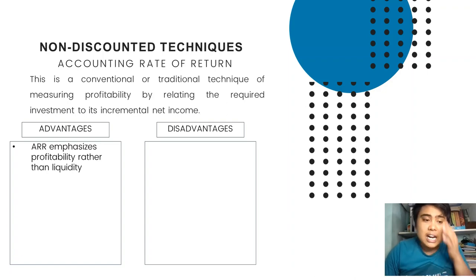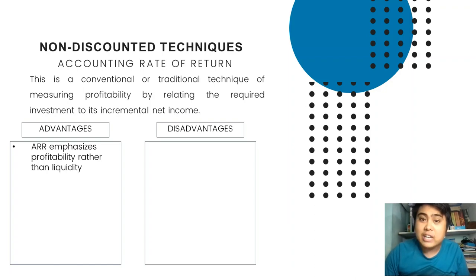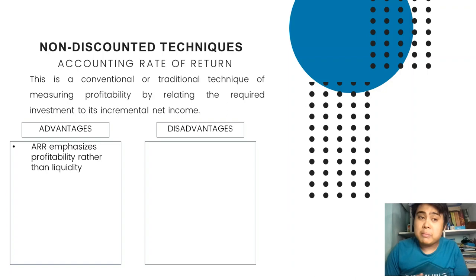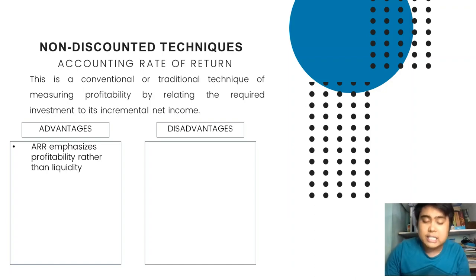In ARR, since profitability is the concern, a higher result is better. When liquidity is the concern, the focus is on how fast the investment is returned — the quicker, the better. But ARR's focus is profitability.